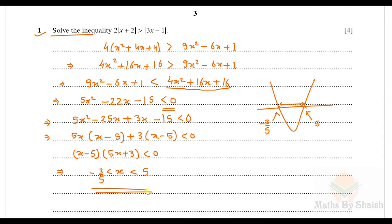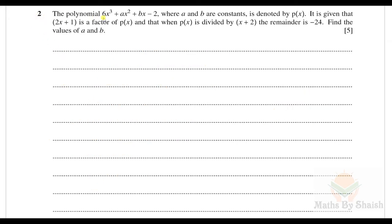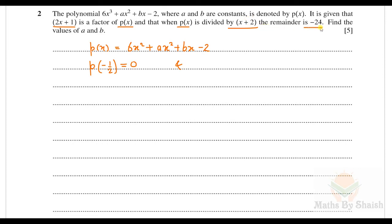Now let's do question number two. The polynomial p(x)=6x³+ax²+bx−2, where a and b are constants. It is given that (2x+1) is a factor of p(x). By the factor theorem, the root of 2x+1=0 is x=−1/2, so p(−1/2)=0. Also, when p(x) is divided by (x+2) the remainder is −24, so by the remainder theorem p(−2)=−24.